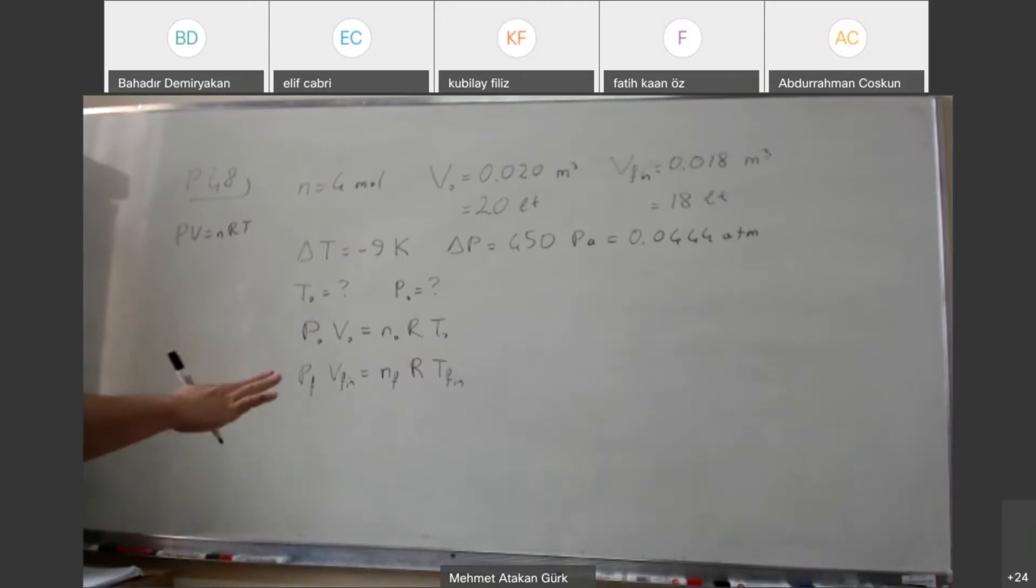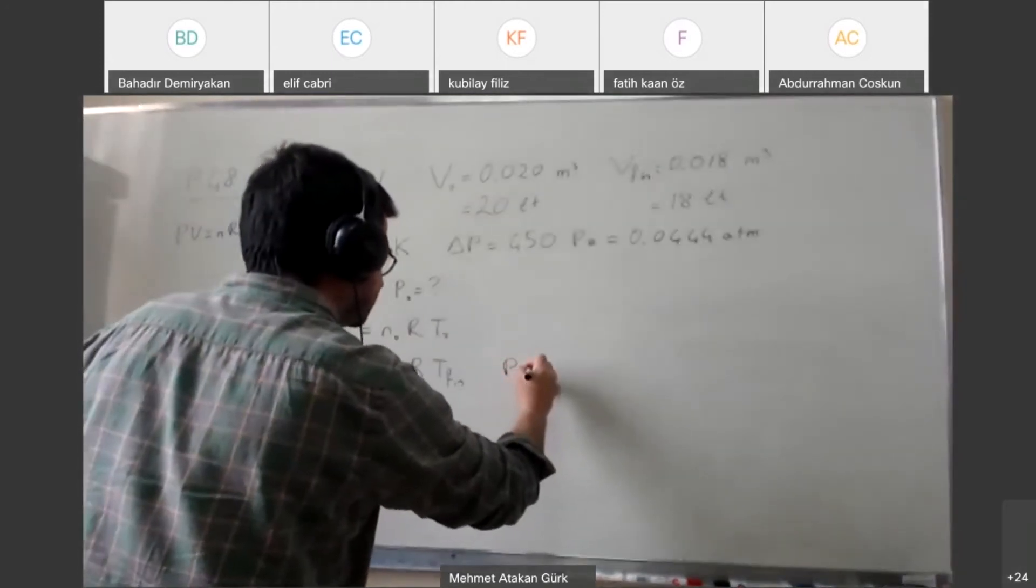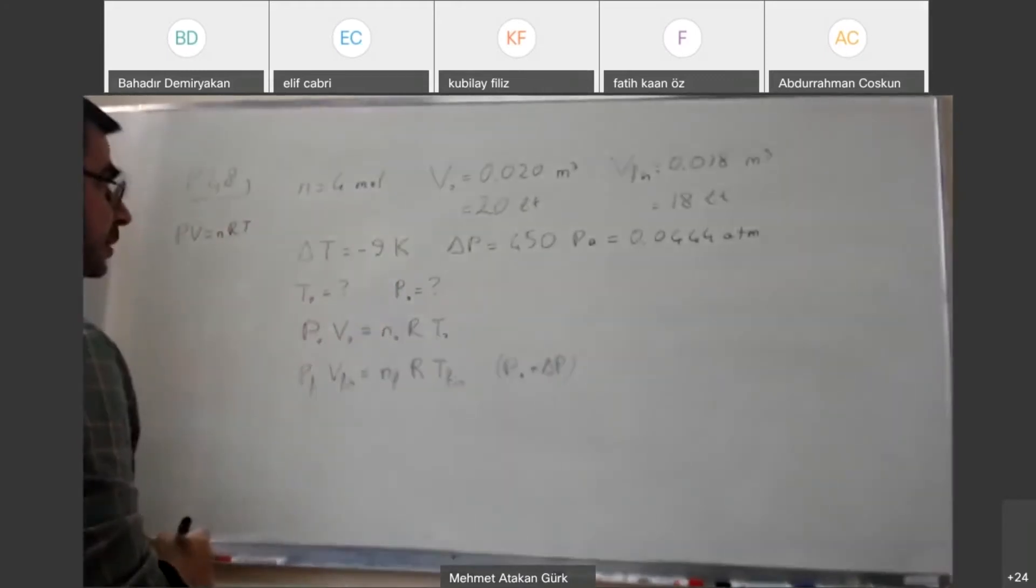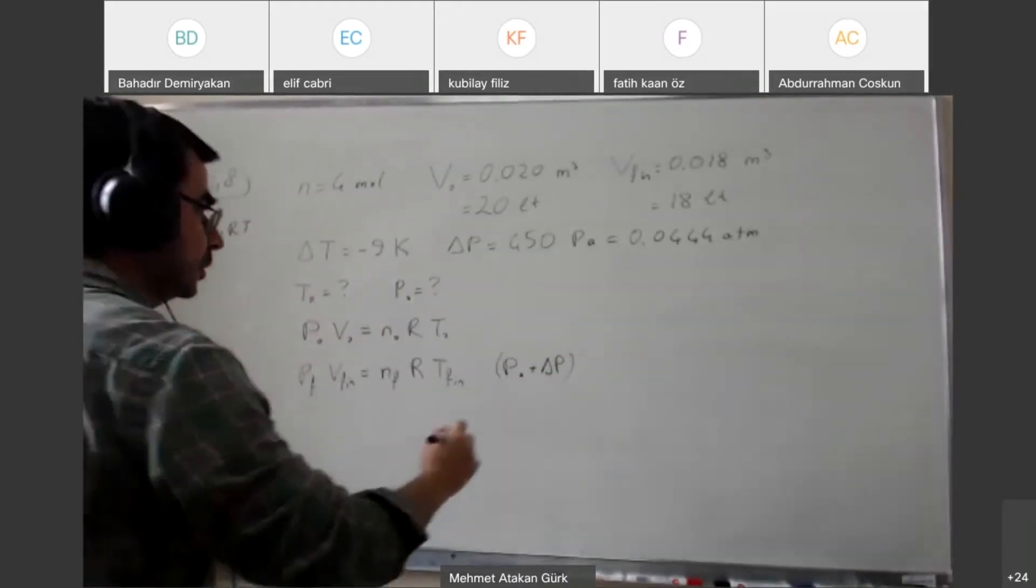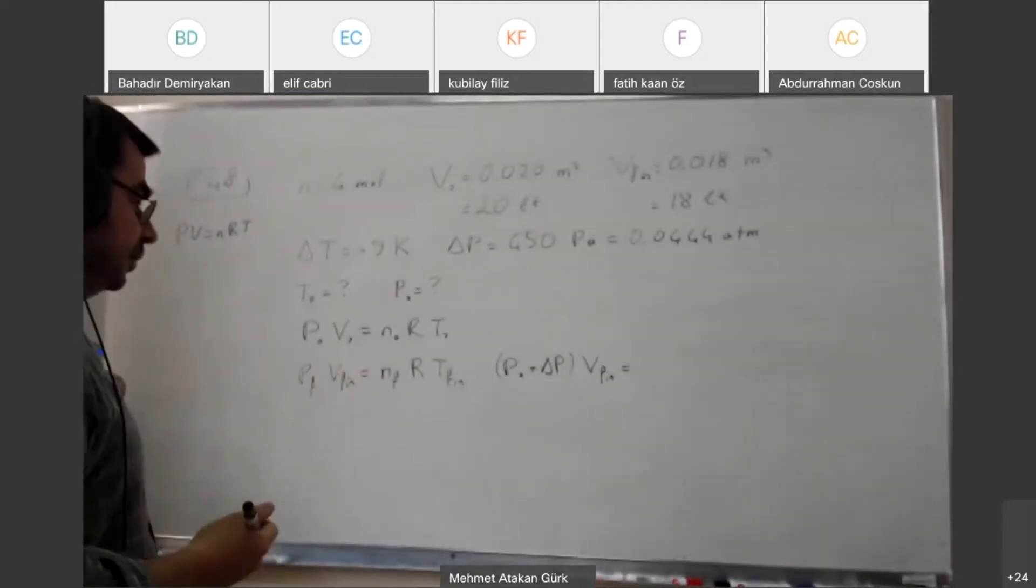But everything else actually changes. So I can rewrite the second equation. P final is P0 plus delta P. I'm trying to express everything in terms of the things that I actually know.